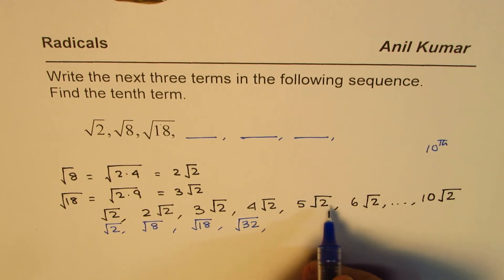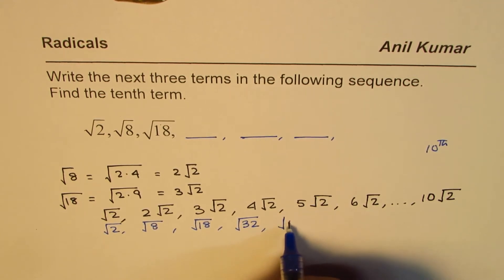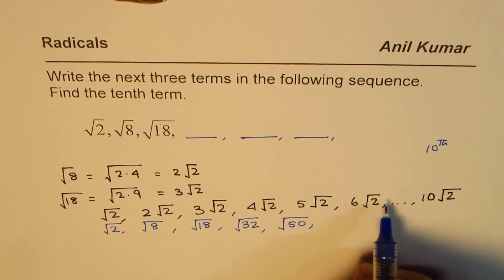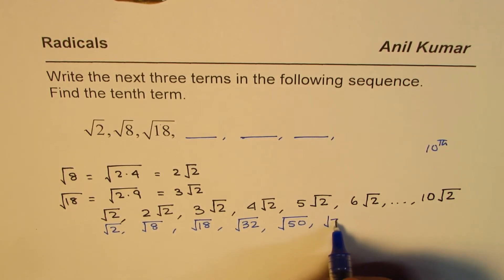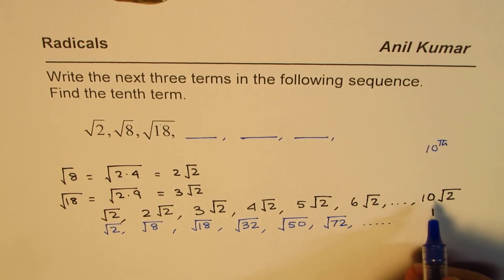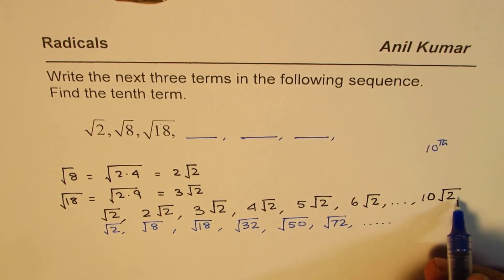5 square is 25, times 2 is 50. 6 square is 36, times 2 is 72. And the 10th term will be 10 square is 100, times 2 is 200.